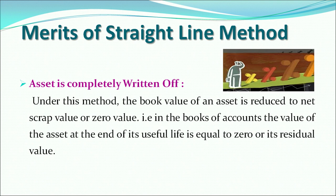What are the advantages or merits of using the straight line method? First, it is a simple method — the calculation is very straightforward, and since the amount of depreciation remains the same and constant, it is easier to calculate and easier to understand. Second, the asset is completely written off, meaning the book value of the asset is reduced to either its scrap value or zero at the end of its useful life.